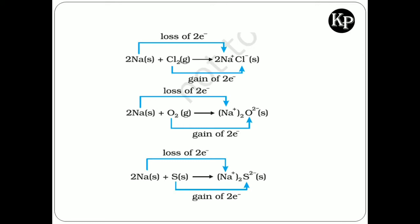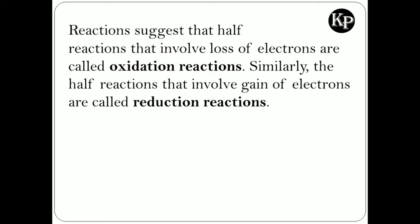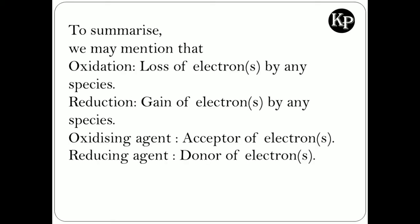Oxygen, chlorine, or sulfur gain electrons. So by this observation, I can say these reactions suggest that the reactions that involve loss of electrons are called as oxidation reactions. And similarly, the reactions that involve gain of electrons are called reduction reactions.